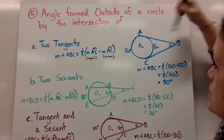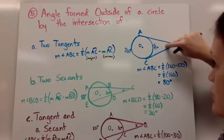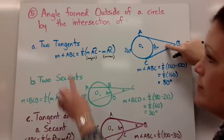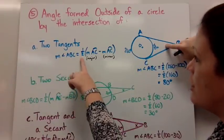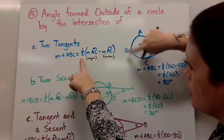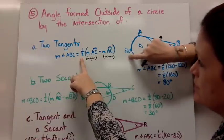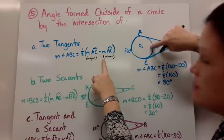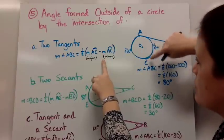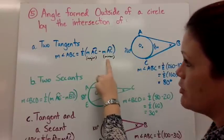But for two tangents, you take the measure we're looking for is this angle out here, that would be equal to half the measure of the larger arc AC, which was 260, minus the measure of the smaller arc, the minor arc AC. So write that part in your notes.